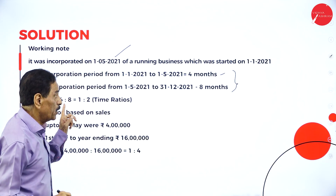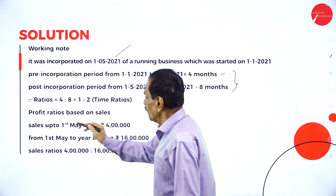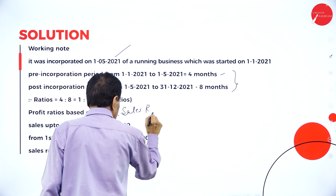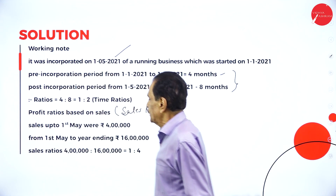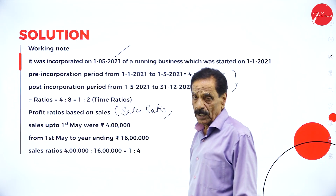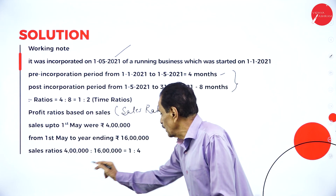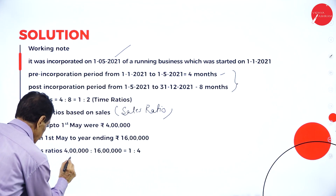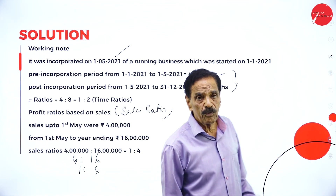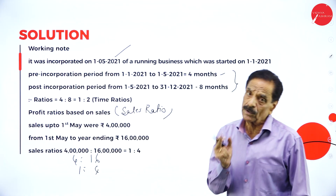The time ratio is 4 months to 8 months, which simplifies to 1 is to 2. Sales up to 1st May are 4 lakh; from 1st May to year ending they are 16 lakh. So the sales ratio is 4 lakh to 16 lakh, which simplifies to 1 is to 4. Expenses are allocated based on the time ratio; profit is allocated based on the sales ratio.